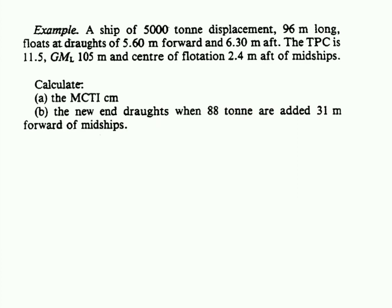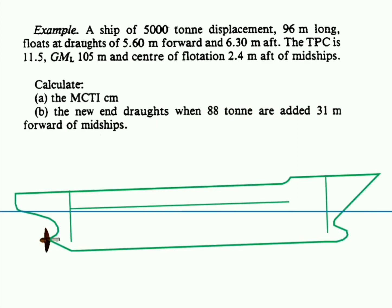Let us understand that this is how the case would be in its initial condition. This is being the midship. This is being the positioning of centre of flotation 2.4 meter aft of midship. The mass is being placed somewhere in the forward at a distance 31 meter. We will first assume that mass has been placed on the centre of flotation and then shifted to its final designated position. The total distance covered by the mass would become 31 plus 2.4.